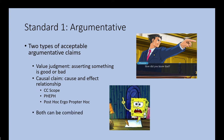You can also do what I call the combo meal, which is to have a value judgment and a causal claim. Oftentimes that happens once you get to the sub-points, which are reasons that support your controlling idea. Perhaps something is good because it causes something. For example, if I say exercise is good, the reason it's good might be because it causes one to become healthy. So a value judgment and a causal claim can work together — that's totally acceptable.